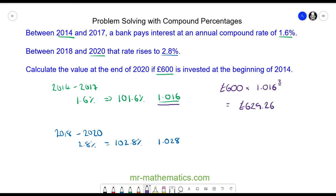In the next two years, between 2018 and 2020, the interest rate changes. So now we have the amount in the account, which is this value, multiplied by the interest of 1.028 to the power of 2, and this comes out as £665.